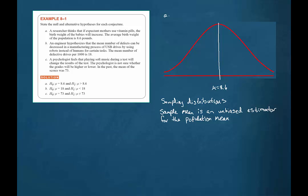Now the question in this example is: is the population mean going to be greater than 8.6 if this action is taken? So here's the question — will the population mean be greater than 8.6?